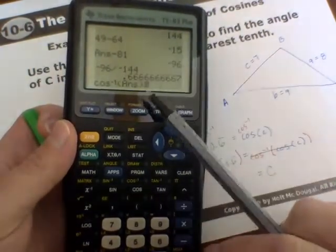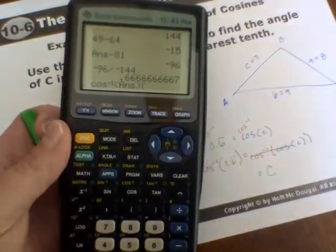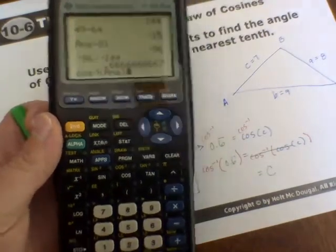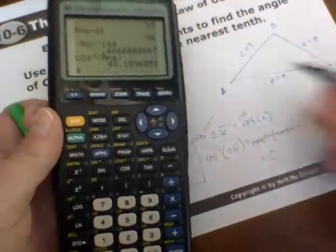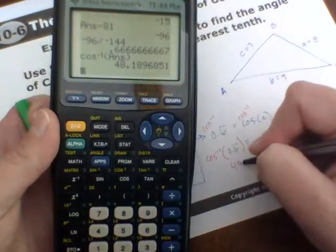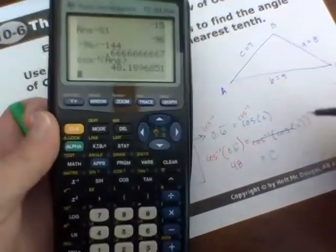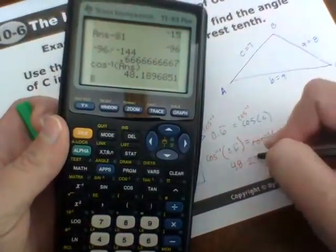And then do it of the answer. So then we'll have to type 0.6 repeating. And then we end with our angle measure of 48 point to the nearest tenth two degrees.